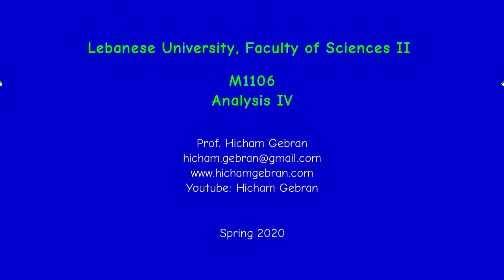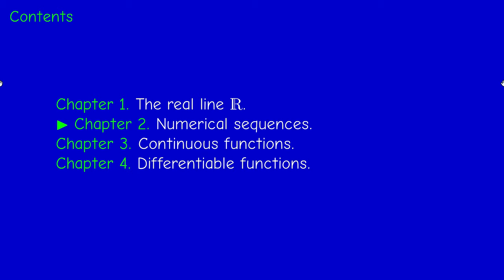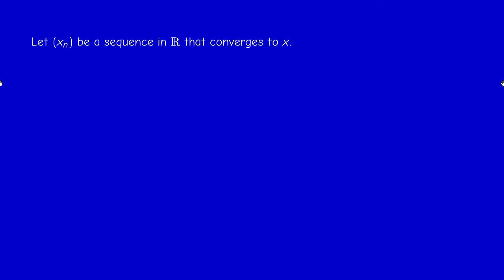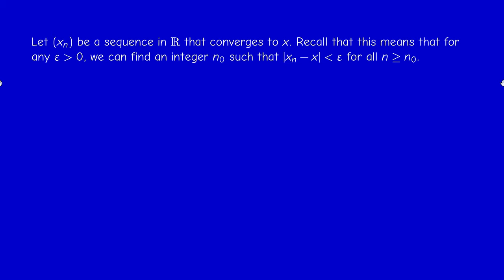Welcome to this new video on Cauchy sequences, section 2.3. Consider the following: if we have a sequence X_n in ℝ that converges to X, it means the difference between X_n and its limit can be made less than any epsilon starting from a certain rank. But to prove convergence according to this definition, you must know the limit. Our purpose is to give a condition to prove that a sequence is convergent without knowing the limit in advance.